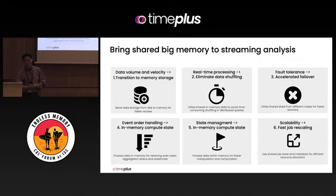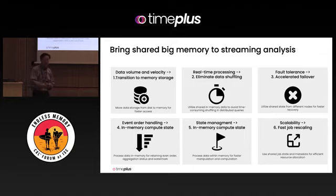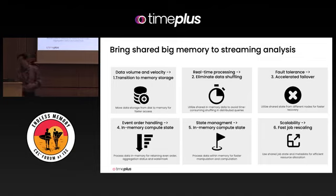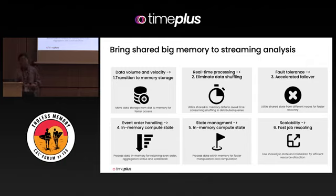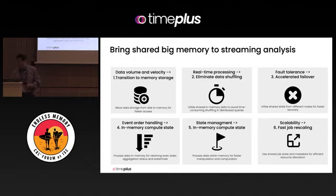Real-time processing — a very critical case is data shuffling. When we do MapReduce or even Spark, the worst case is data shuffling. It's pretty common but really time-consuming. Failover, event ordering, and state are definitely critical topics for how stream processing manages state. Job rescaling — when we want to scale out to a new node, we have to move a lot of state or metadata, which is very expensive.